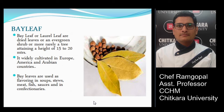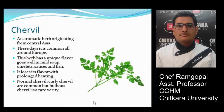The next herb is chervil, one of the aromatic herbs originating from central Asia, now common all around Europe. It has a unique flavor that goes well in mild soups, omelets, sausages, and fish. It loses its flavor with prolonged heating. Normal chervil and curly chervil are common varieties used in continental and Mediterranean cuisines.